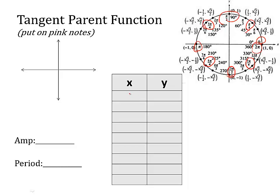If I start at x = 0, what is y? y is the tangent — it's the y-coordinate divided by the x-coordinate. So at 0, y divided by x is 0 over 1, which is 0. If I go up to π/4, what I get is a tangent of positive √2/2 over positive √2/2, which gives me a tangent of 1. At π/2, I'm going to get 1 over 0, which is undefined.